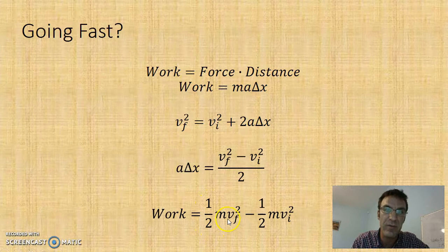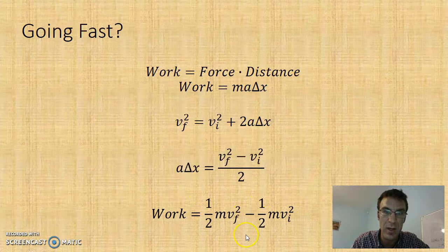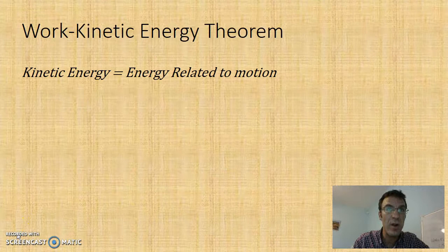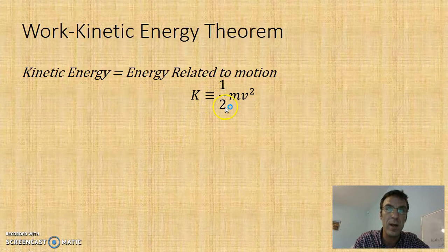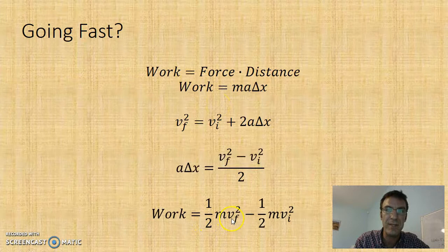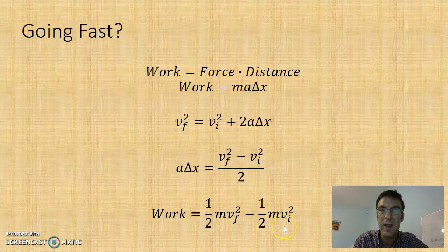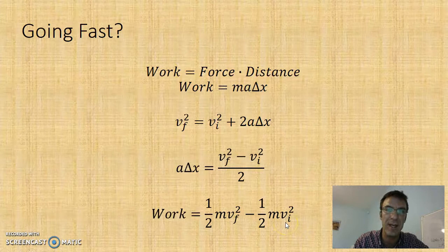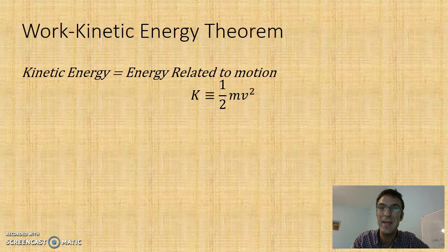Plugging that back into the work equation leaves us with: work equals one-half m V final squared minus one-half m V initial squared. We're going to define this one-half mv squared as kinetic energy. So if the object has a constant mass, we have the final kinetic energy minus the initial kinetic energy — the change in kinetic energy. This ties together in something called the work-kinetic energy theorem.